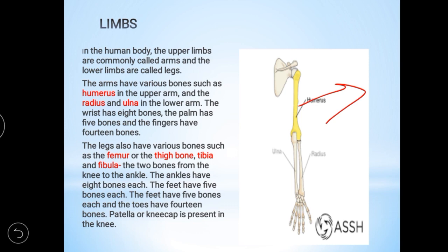Today we have learned about the skeletal system. The parts are: skull, spine or backbone, rib cage, and limbs. The skull has eight cranial bones and 14 facial bones, divided into cranium and mandible. The spine has 26 bones called vertebrae. The rib cage has 24 bones in 12 pairs. The limbs have humerus, radius, and ulna in the arm, and femur, tibia, and fibula in the leg.